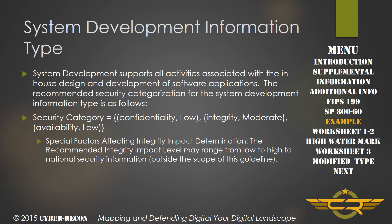This is the breakout of the information for the system development information type as it's defined in 800-60. The system development information type supports all activities associated with in-house design and development of software applications. The recommended security categorization for the system development information type is: confidentiality low, integrity moderate, and availability low. There are also special factors affecting integrity impact, and the recommended integrity impact level may range from low to high, or to national security information, which is outside the scope of 800-60 but is covered more fully in CNSSI 1253.